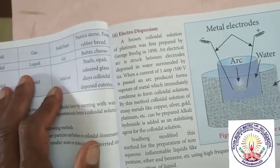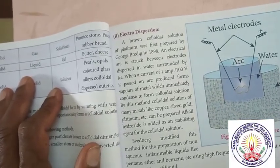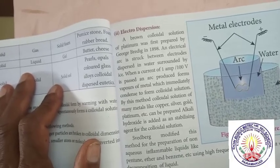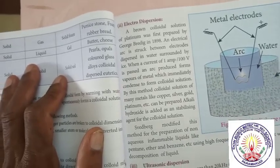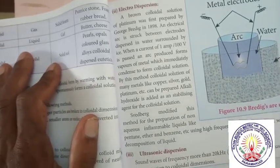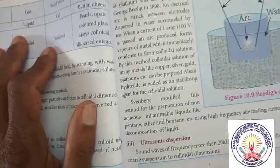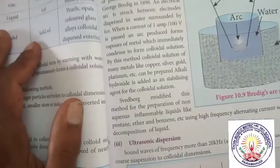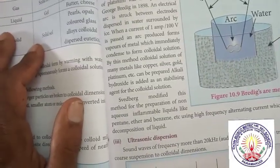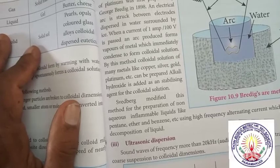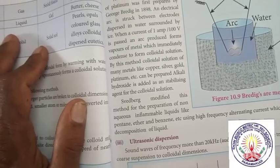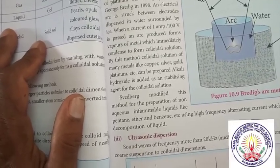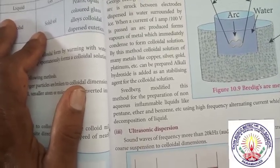When a current of 1 ampere at high voltage is passed, an arc produced forms vapors of metal which immediately condense to form colloidal solution. By this method, colloidal solutions of many metals like copper, silver, gold, platinum, etc. can be prepared. Alkali hydroxide is added as a stabilizing agent for the colloidal solution.